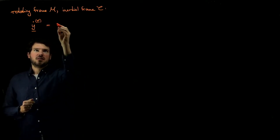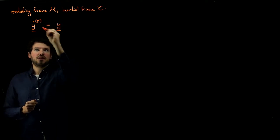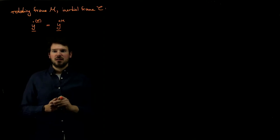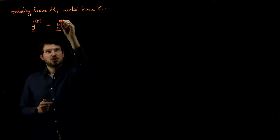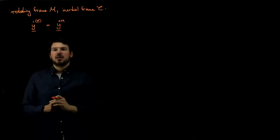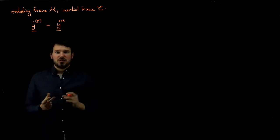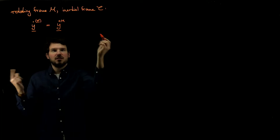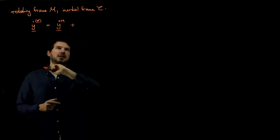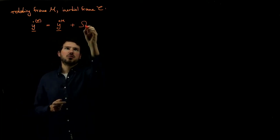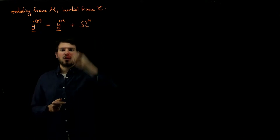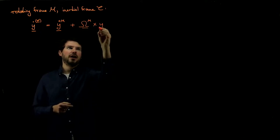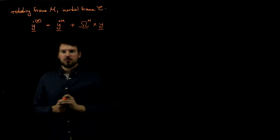This is nothing else but the time derivative of that same vector as a moving observer in frame M would see — indicated by an open circle on top meaning the time derivative seen in the moving frame. But these are obviously not the same, so we need a correction term: the angular velocity of that moving frame cross the vector y we're referring to.